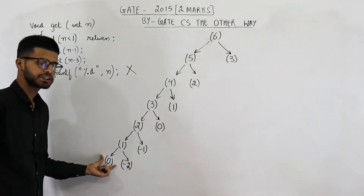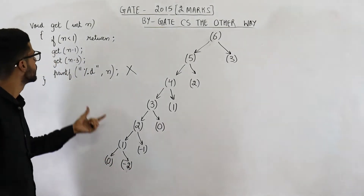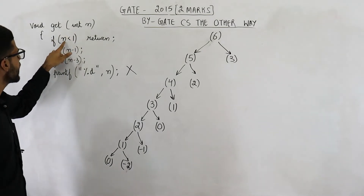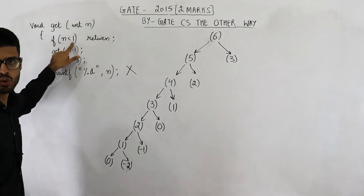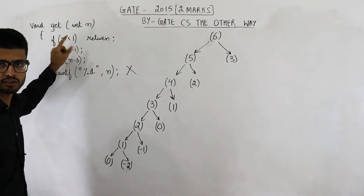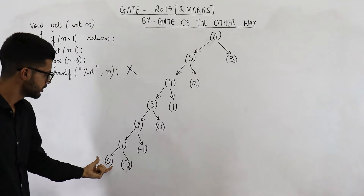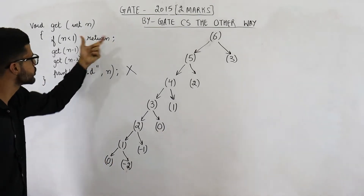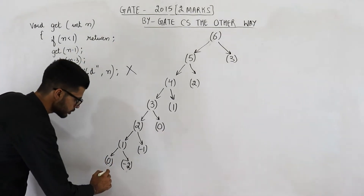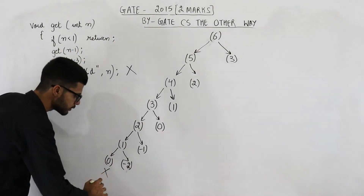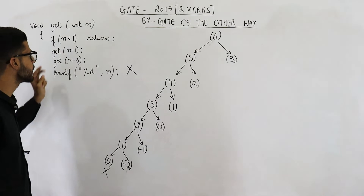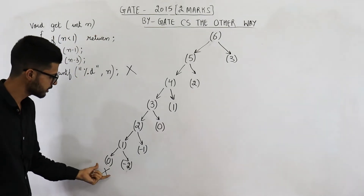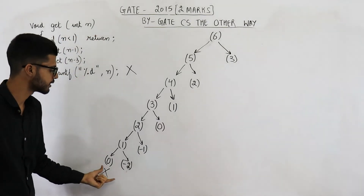Now just have a look. When this function starts, it will check if n is less than 1. Now this n is 0. 0 is actually less than 1, that means you will return. So this function will not do anything — it will return on the first line only. So this function call has ended.